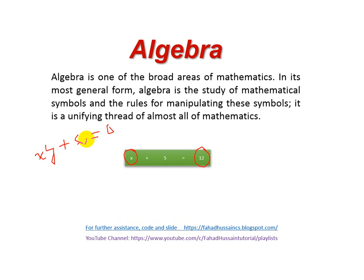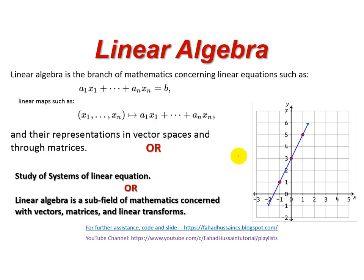So algebra and linear algebra difference. So algebra, whatever X and Y, this unknown value, similarly here unknown value X. So if you solve this, 5 to 12 minus 5 is X. And when we solve here, 7 value, so X unknown is 7. So 7 plus 5 is 12 and now this equation will be solved. So that is a brief definition about algebra, what is algebra and how we can find unknown values.